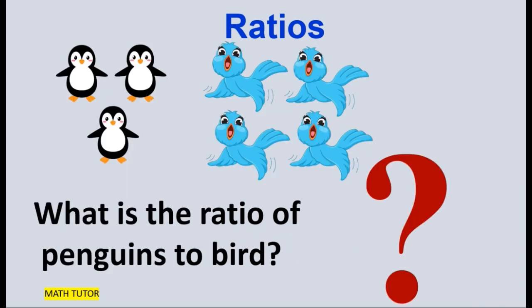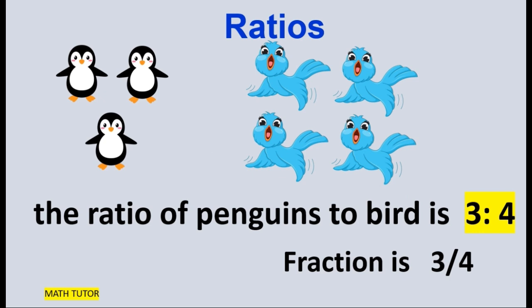What is the ratio of penguins to birds? Let's count — how many penguins and how many birds are there? There are 3 penguins and 4 birds. So the ratio will be 3 is to 4, or as a fraction, 3 by 4.